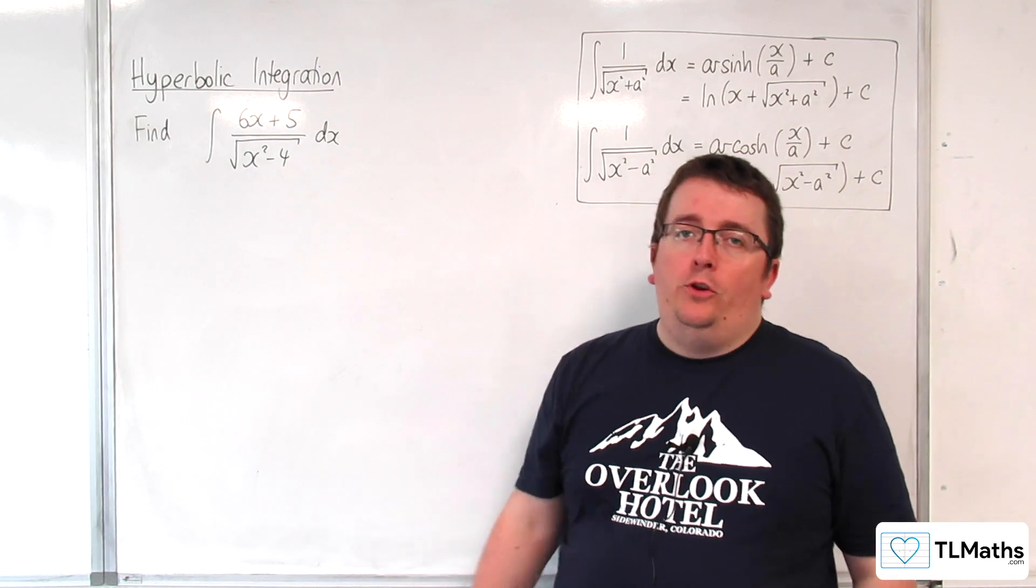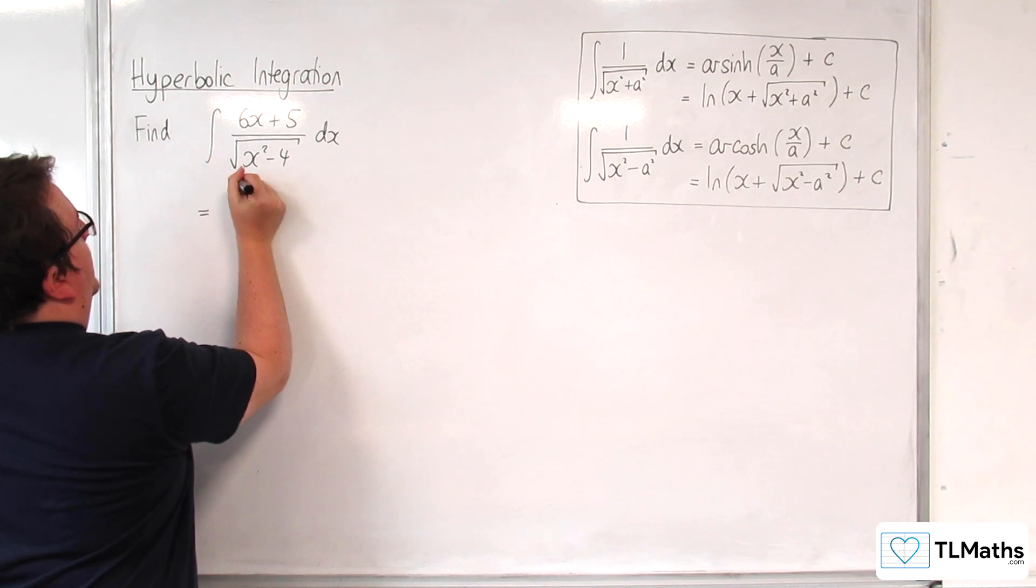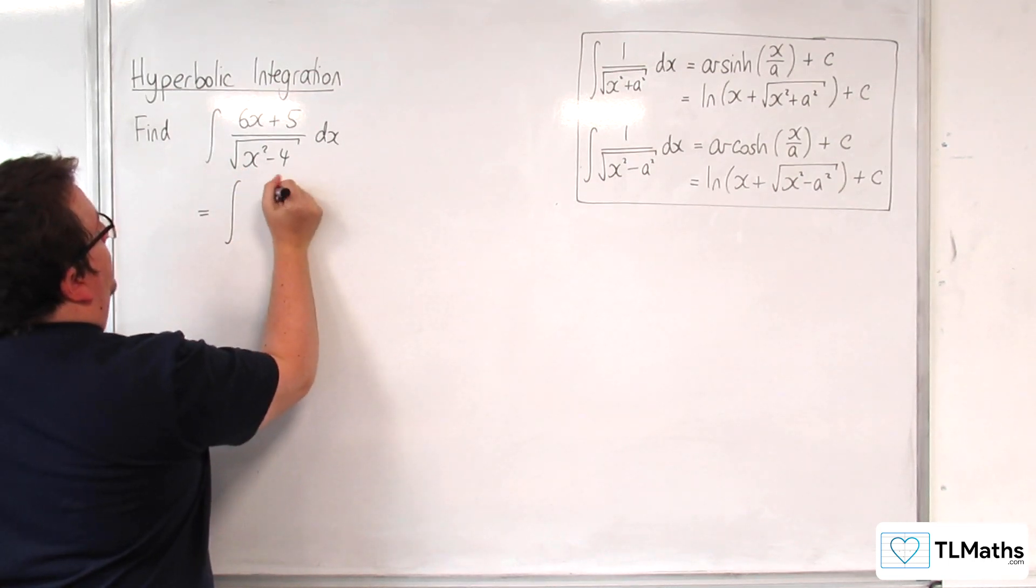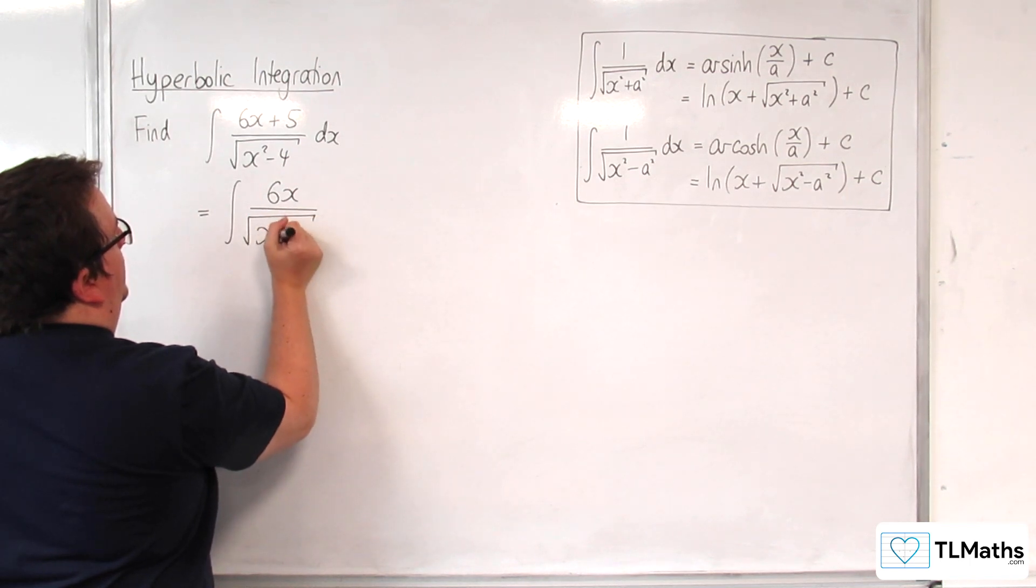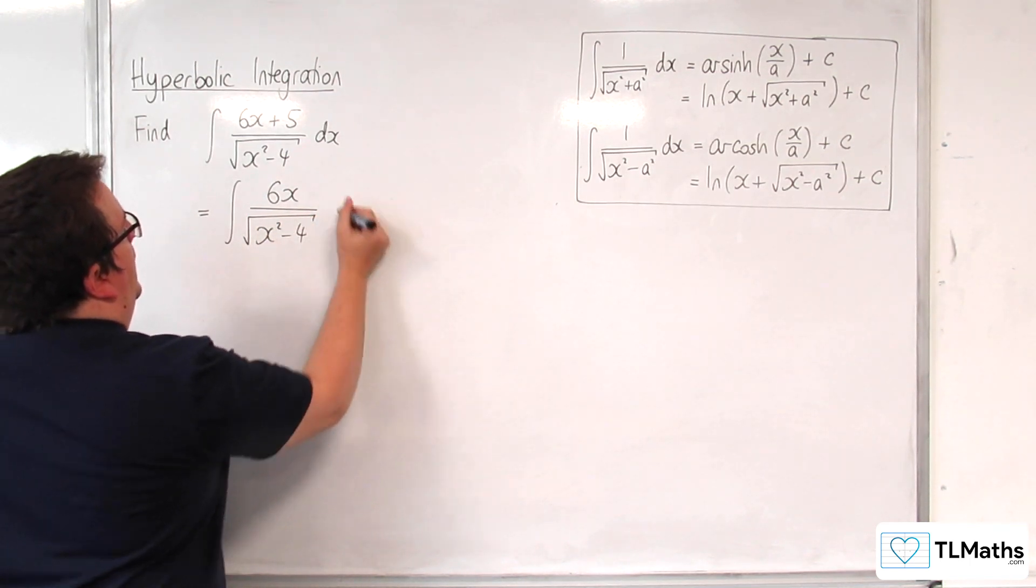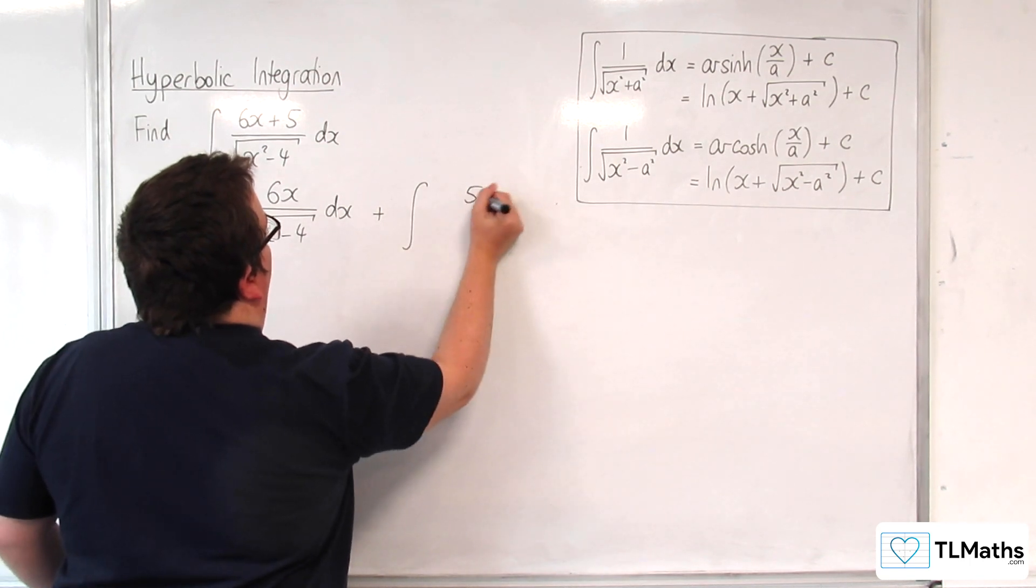Now what you want to do with this is split it up into two integrals. So we're going to have the integral of 6x over the square root of x squared take away 4 dx plus the integral of 5 over the square root of x squared take away 4 dx.